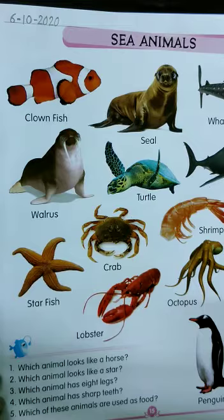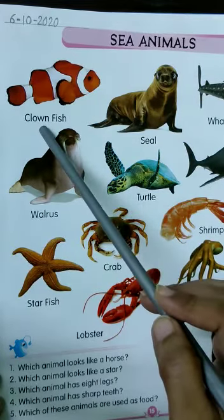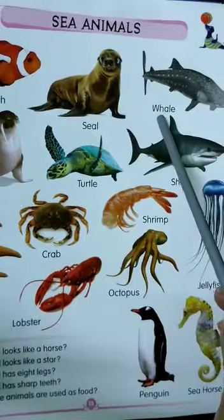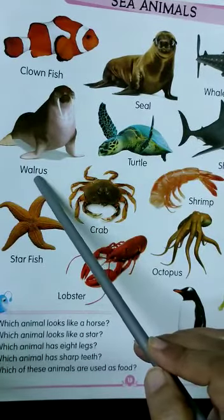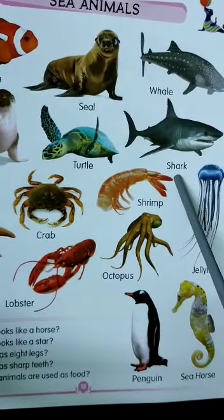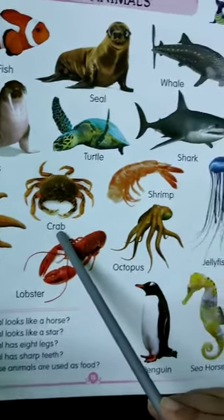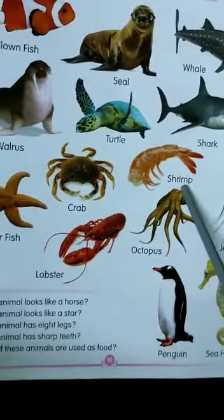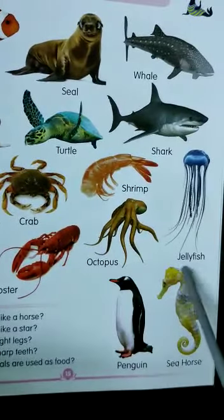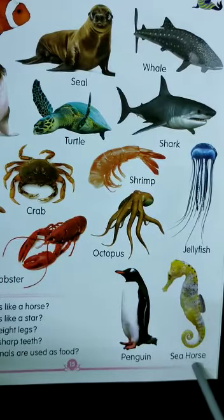Let's see some examples with the help of our book. Keep your index finger here and read: clownfish, seal, whale, walrus, turtle, shark, starfish, crab, shrimp, lobster, octopus, jellyfish, penguin, and seahorse.